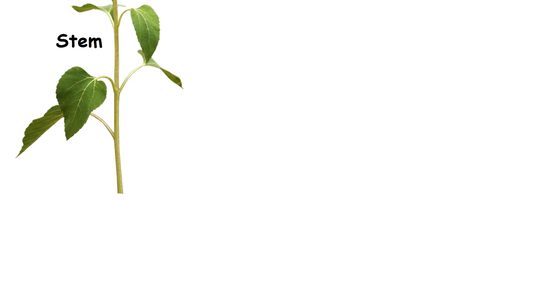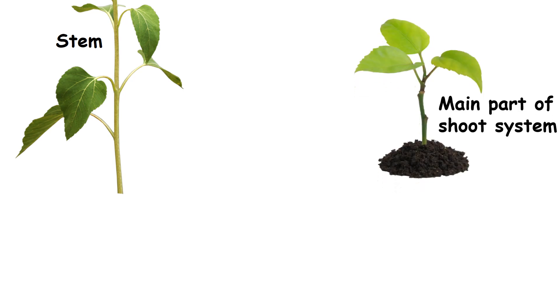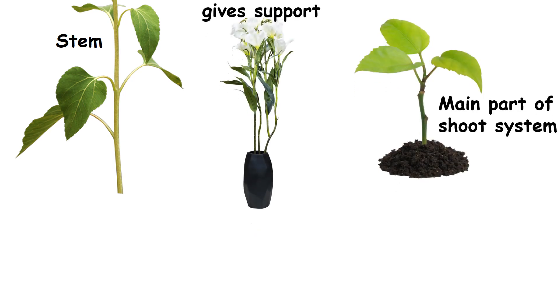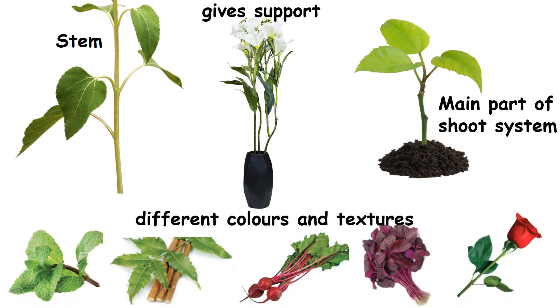Stem. It is the main part of the shoot system. It gives support to the plant. Stems are of different colors and textures.